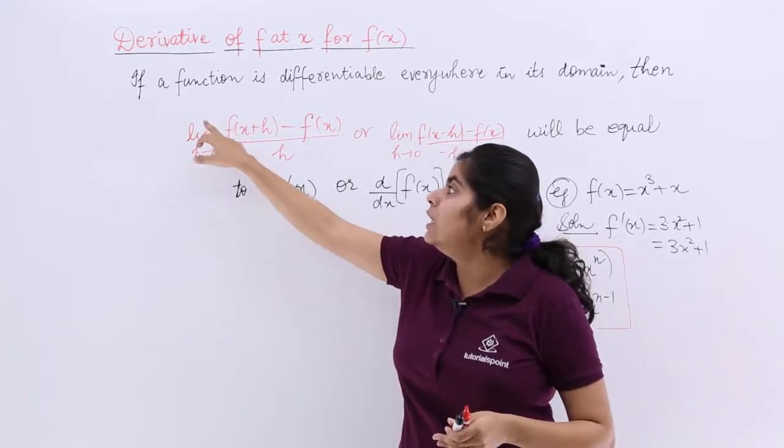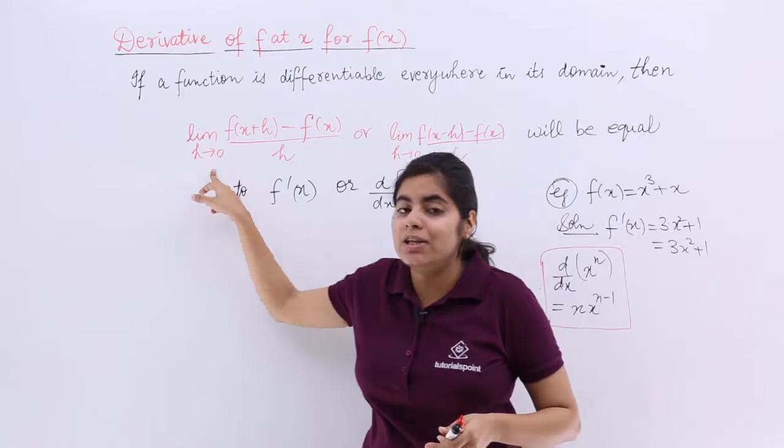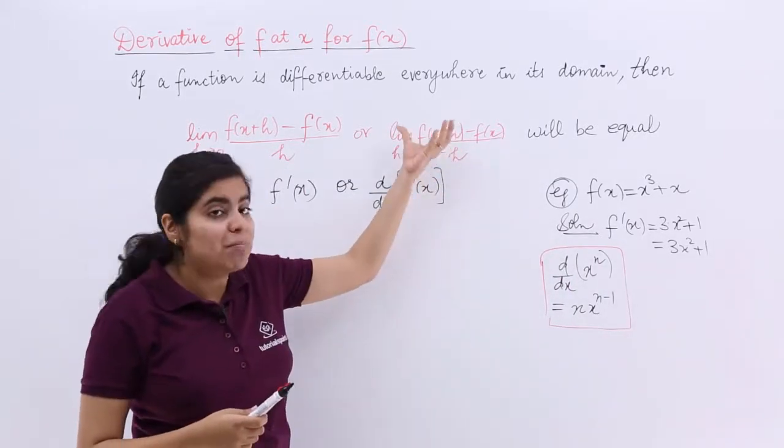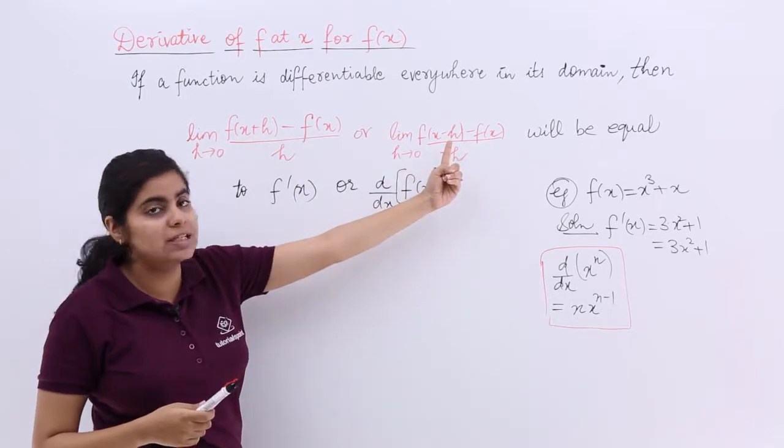What is this formula? Limit f of x plus h minus f(x) upon h where the limit is h tends to 0, or f of x minus h minus f(x). See, earlier it was plus h, here it is minus h.